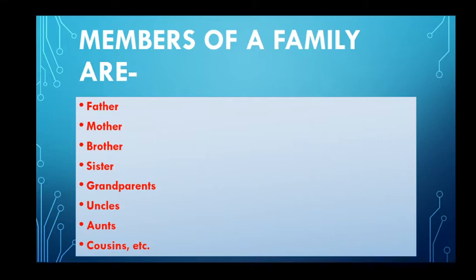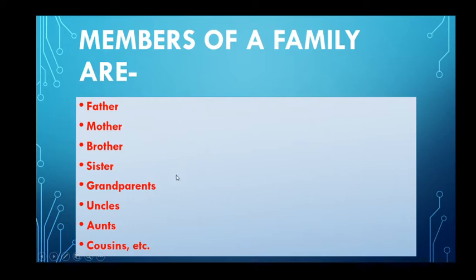Now we will see how family members are related. There are various members in our family: father, mother, brother, sister, grandparents, uncle, aunt, and cousin. Father, mother, brother, and sister make a small family. If we include grandparents, it becomes a big family. And if we include uncle, aunt, and cousins, it is a joint family.